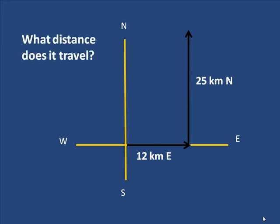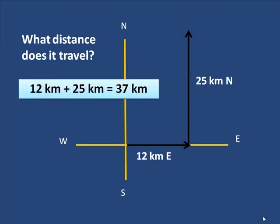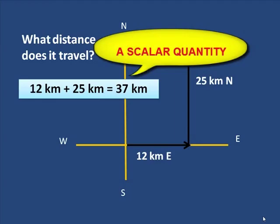Now if I ask the question, what distance does it travel? That's easy. How much ground did it cover? You add it up. 12 plus 25, 37. This is a scalar quantity. A number in a unit. Magnitude only.